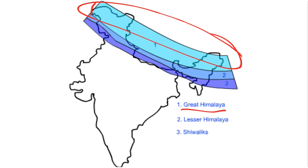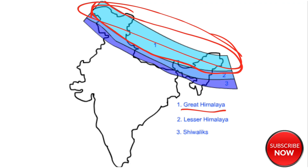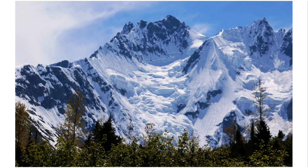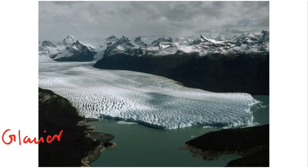The Himadri or Great Himalaya extends from Kashmir to Arunachal Pradesh and contains all the prominent peaks. The folds of the Great Himalayas are made of granite, are asymmetrical in nature, and the range is perennially snowbound. A number of glaciers descend from this range.